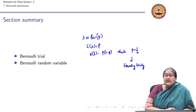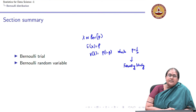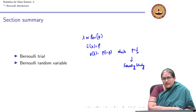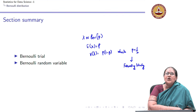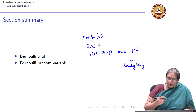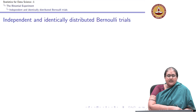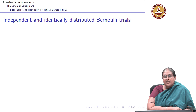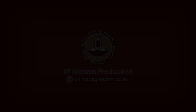We have reviewed the Bernoulli trial: X is a Bernoulli random variable with parameter p, expectation p, and variance p(1 − p) which is maximized at p = 1/2 — meaning outcomes are equally likely, giving the most uncertain Bernoulli trials. From this Bernoulli random variable, we are now going to extend the notion of two mutually exclusive outcomes to a binomial random variable. But before that, we need to understand what we mean by independent and identically distributed Bernoulli trials.